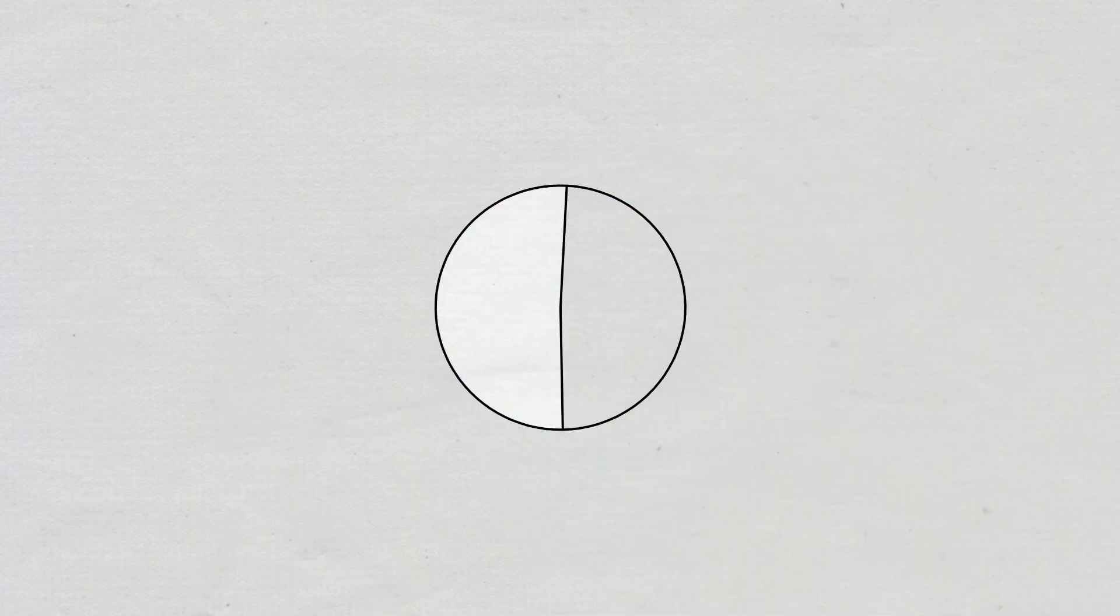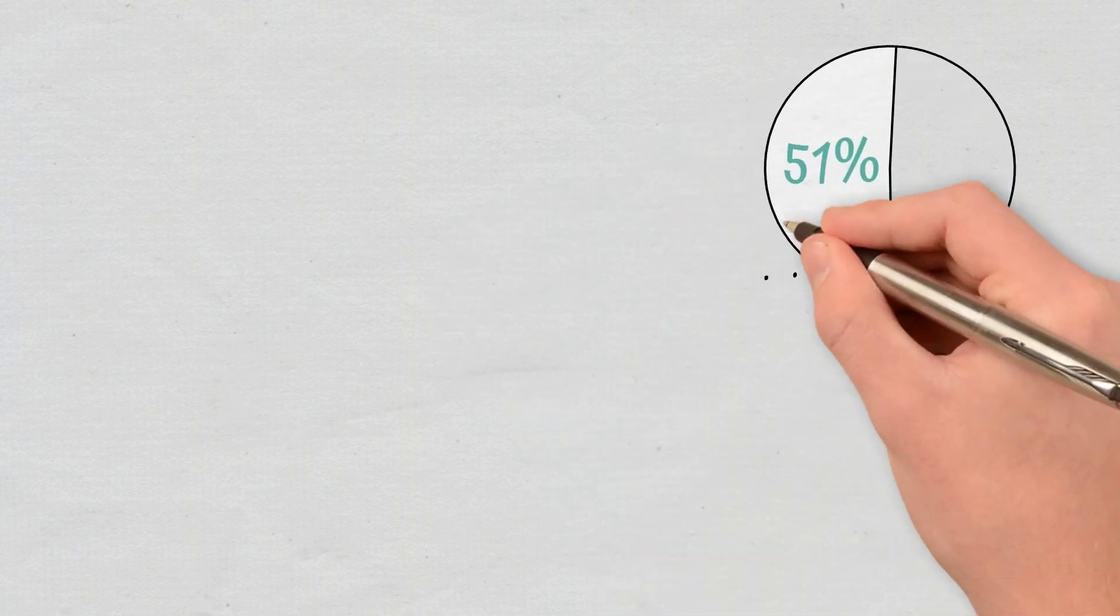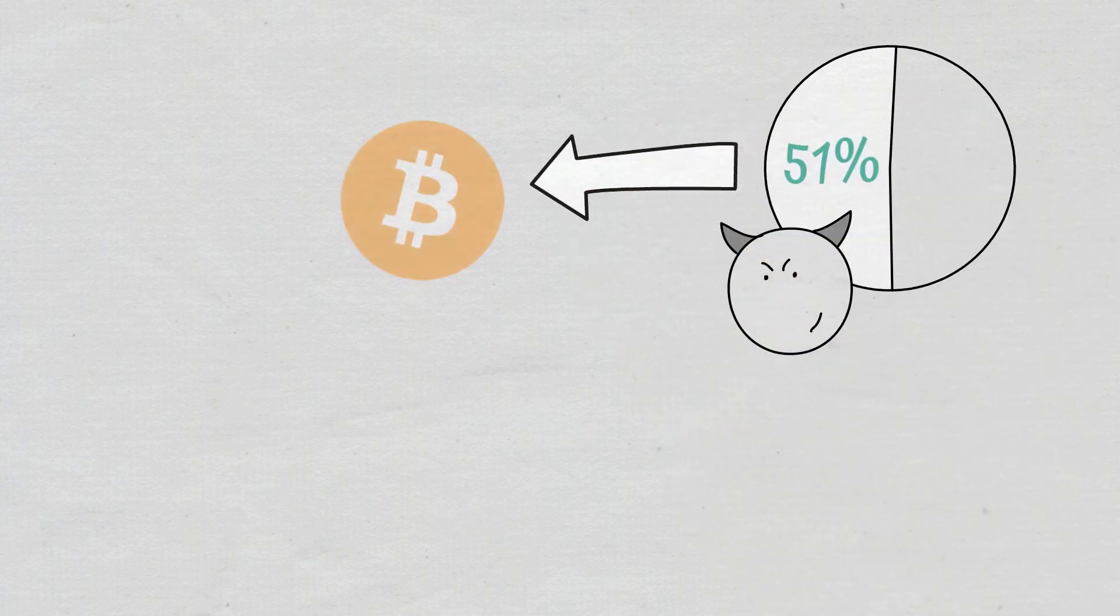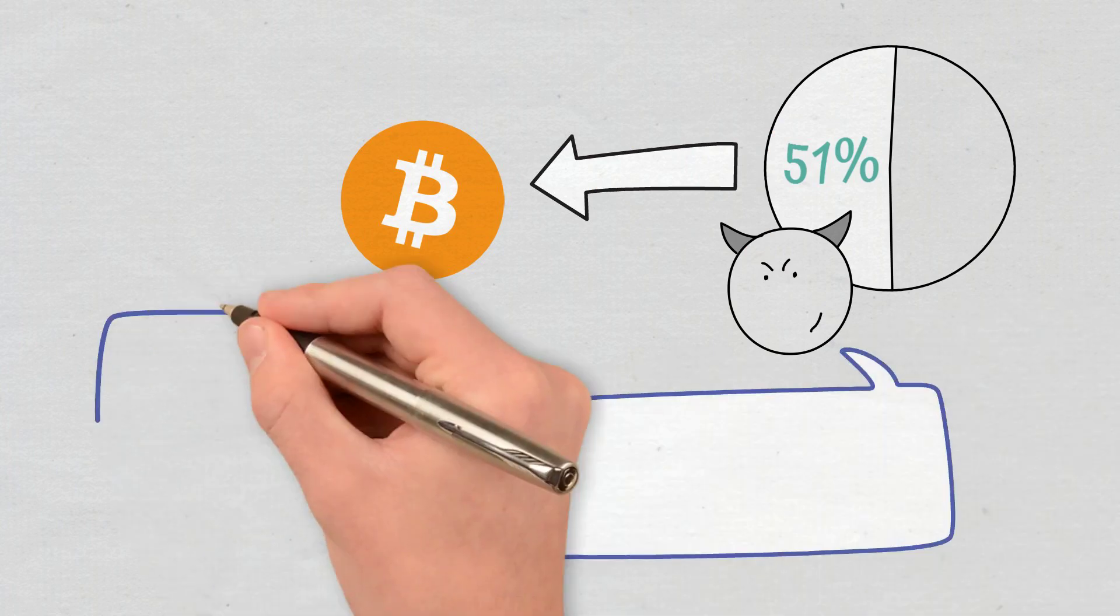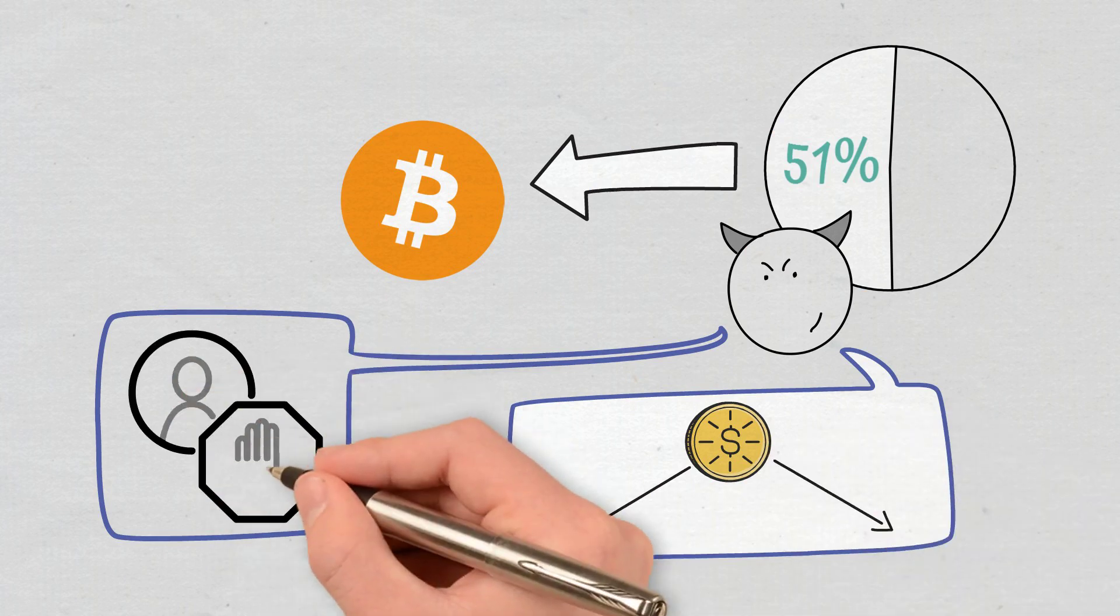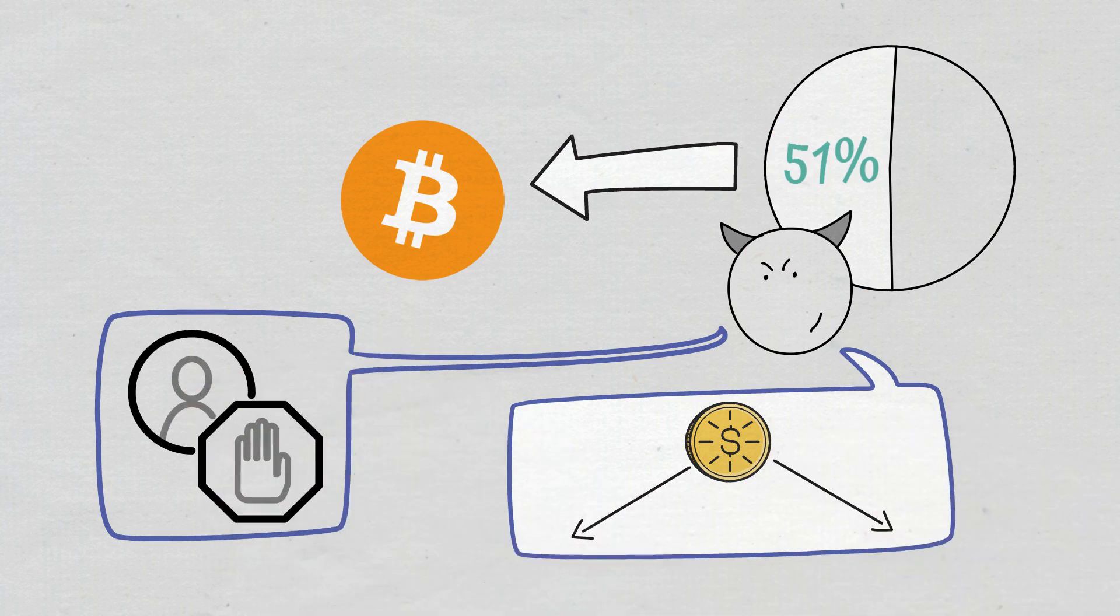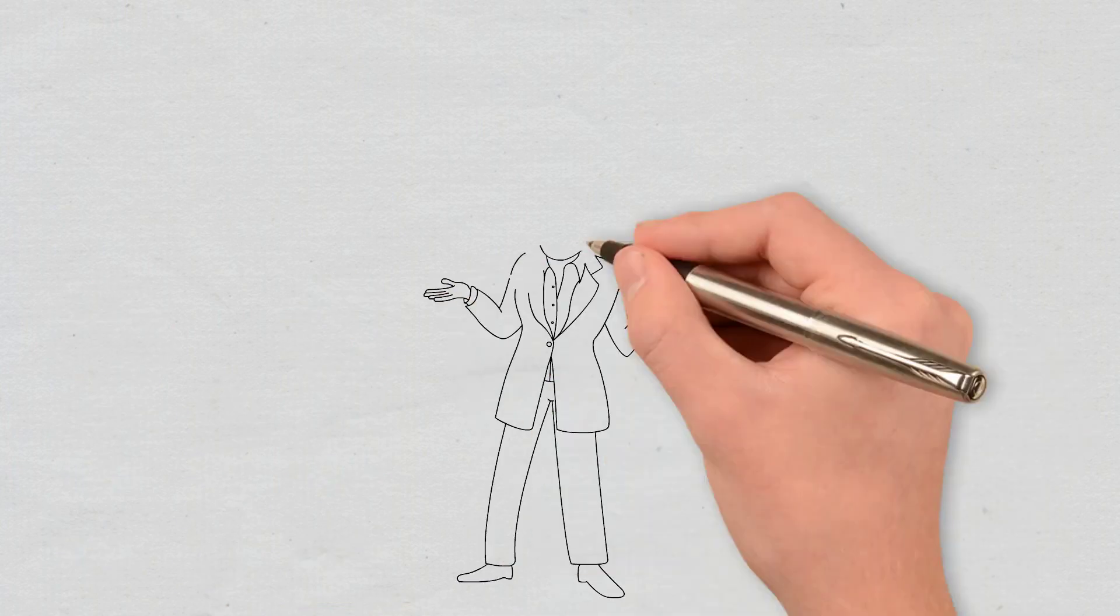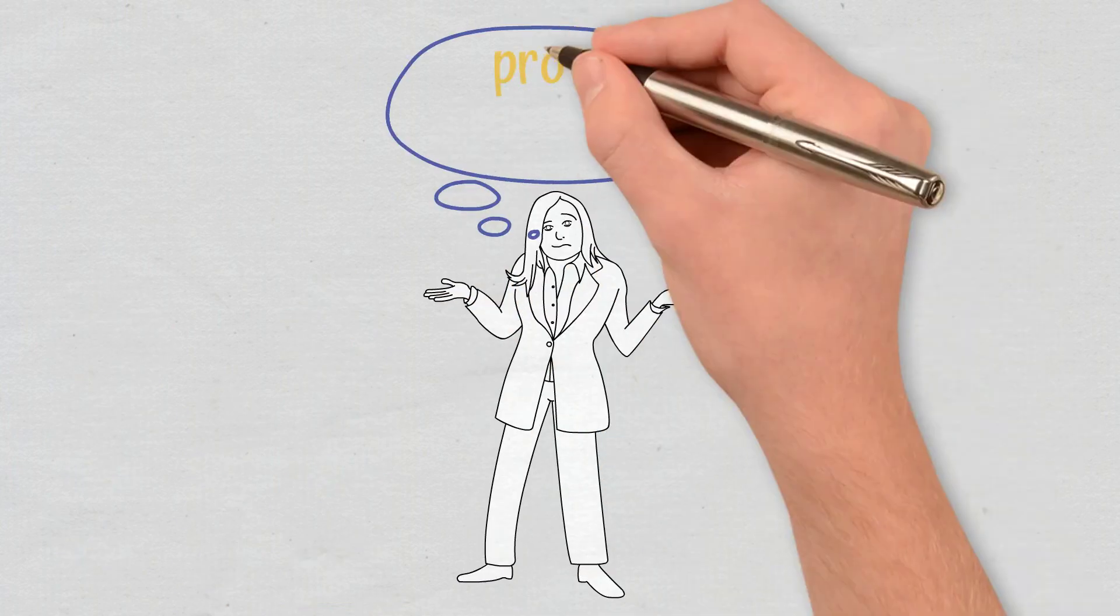51% attacks are another problem. As we previously mentioned, if someone is able to accumulate 51% of Bitcoin's mining hash rate, the entity would have the power to flout the rules for the moment, either for double spend or even for blocked transactions. Examples of those attacks are those against Krypton, Shift, and Bitcoin Gold. These problems are why some have decided to move to proof-of-stake.